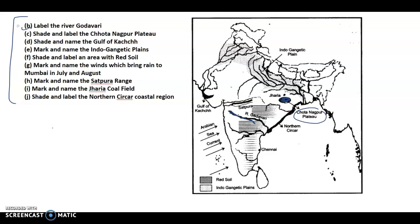Then we have the Gulf of Kutch — this is the Gulf of Kutch. Then mark the Indo-Gangetic Plains — these are the Indo-Gangetic Plains, this part.